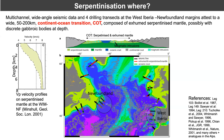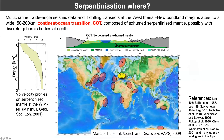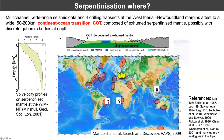Similar velocity structures have been observed in other margins, which have been interpreted to have a similar continental-ocean transition. In the last 15 to 20 years, it has been suggested that this process is much more widespread than we thought, but recent drilling in the South China Sea, which found a magmatic crust just close to the thin continental crust, has questioned this interpretation.